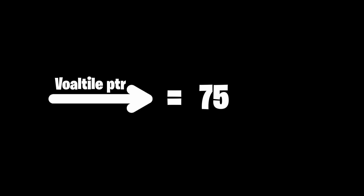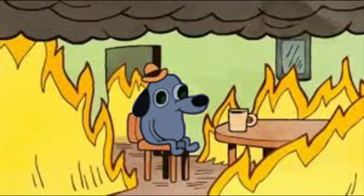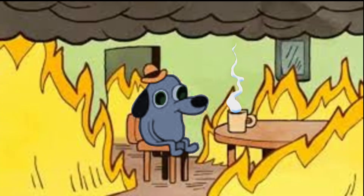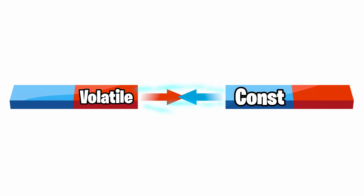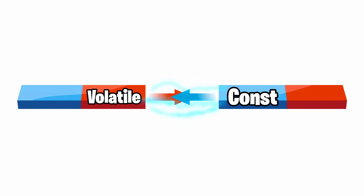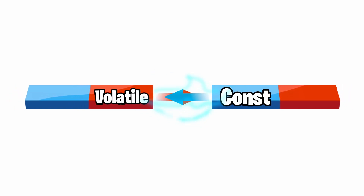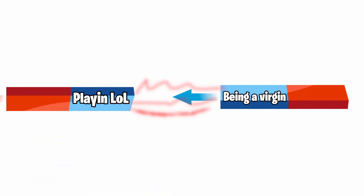Another example of a pointer qualifier is const, which means that the data the pointer is pointed to won't change at all. Just like my fear of talking to women won't ever change. So volatile and const are pretty much the opposite of one another, like playing League of Legends and losing your virginity are.